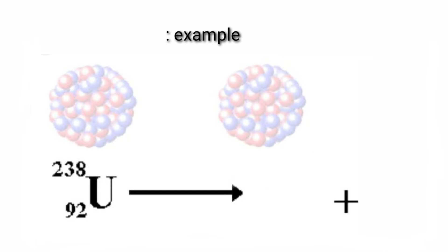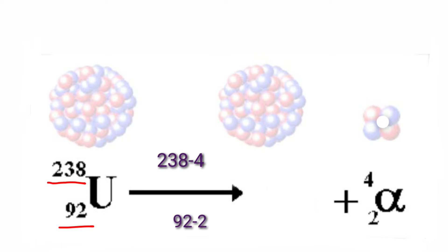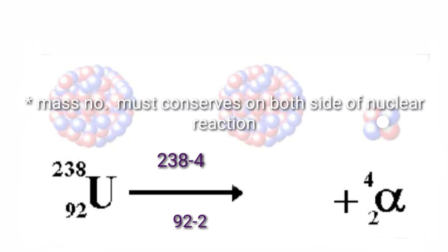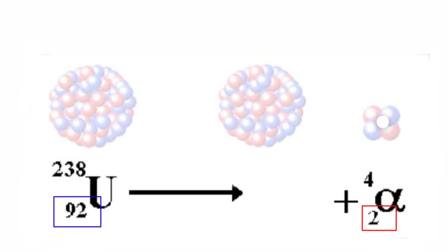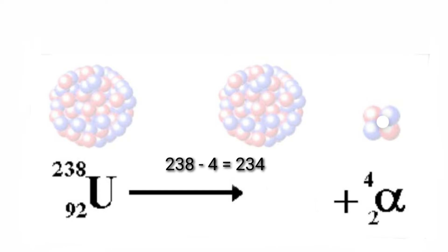For example, we have uranium-238, which is a radioactive substance with atomic number 92. When alpha decay occurs, the atomic mass decreases by 4 and atomic number decreases by 2. So atomic number becomes 90 (since 90 + 2 = 92, conserving atomic number), and the new atomic mass is 238 minus 4 equals 234. The daughter nuclei has atomic number 90 and mass 234, which is thorium.